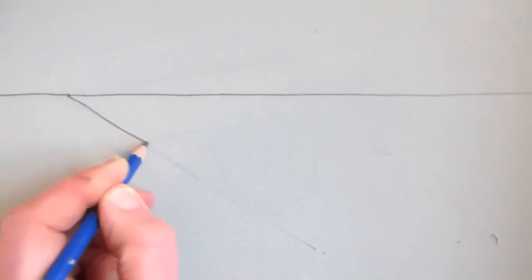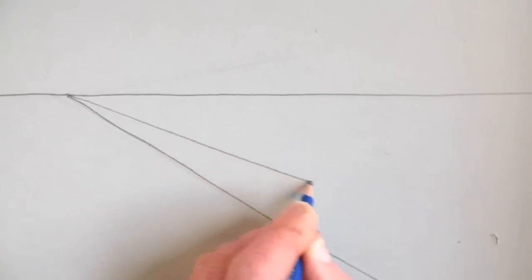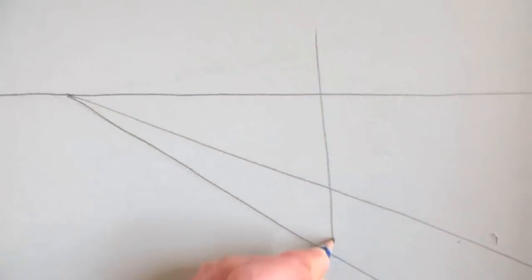Next, draw two lines from the vanishing point to the right hand corner of your page. Then from these two lines, draw a rectangle that is higher than the horizon.